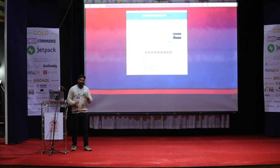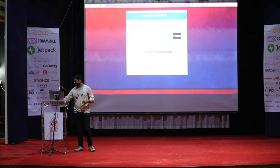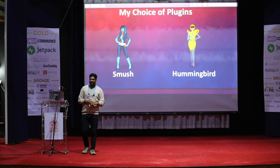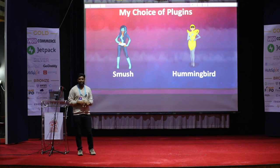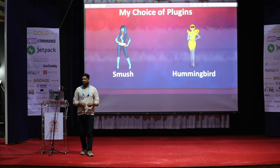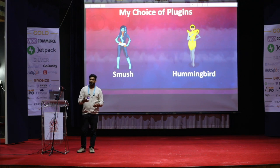This is how you make your website score 99 or 100 out of 100. As for my choice of plugins, I use two: Hummingbird and Smush. Smush is for image optimization, and Hummingbird is for caching, moving files to the footer, and expires headers.